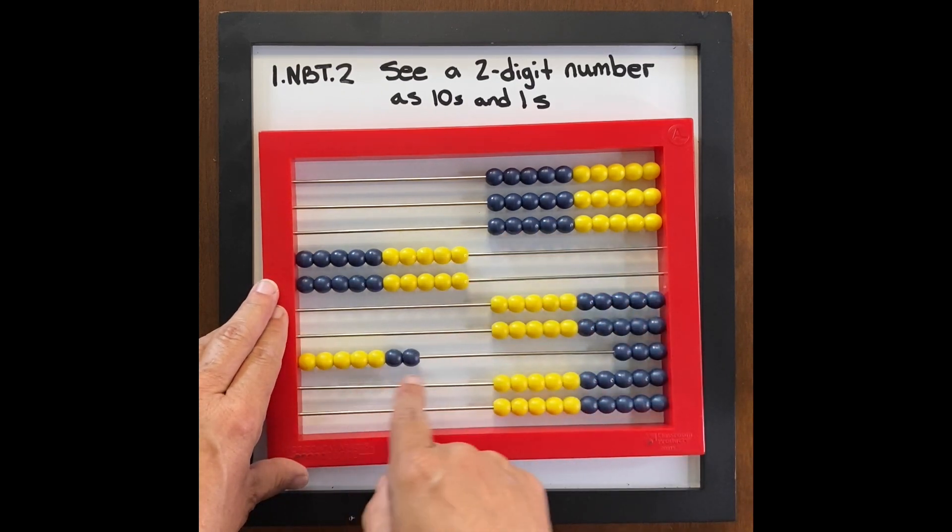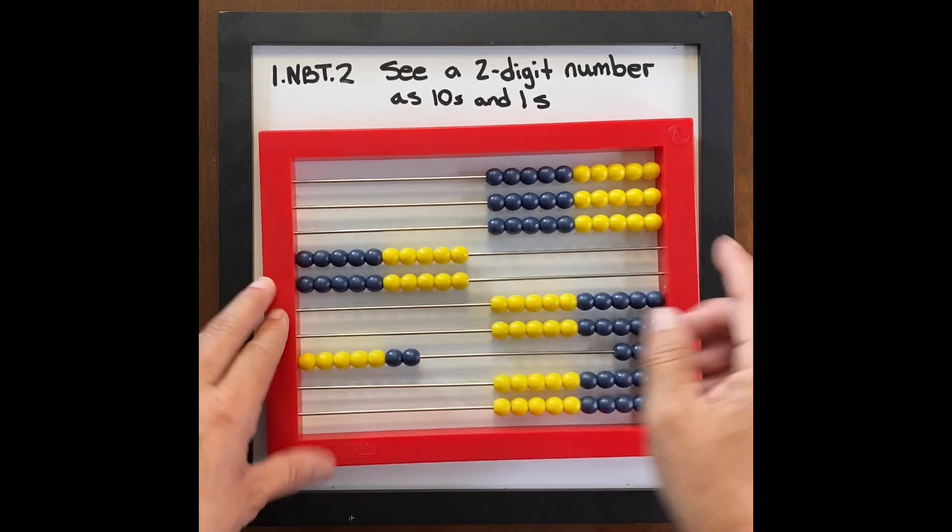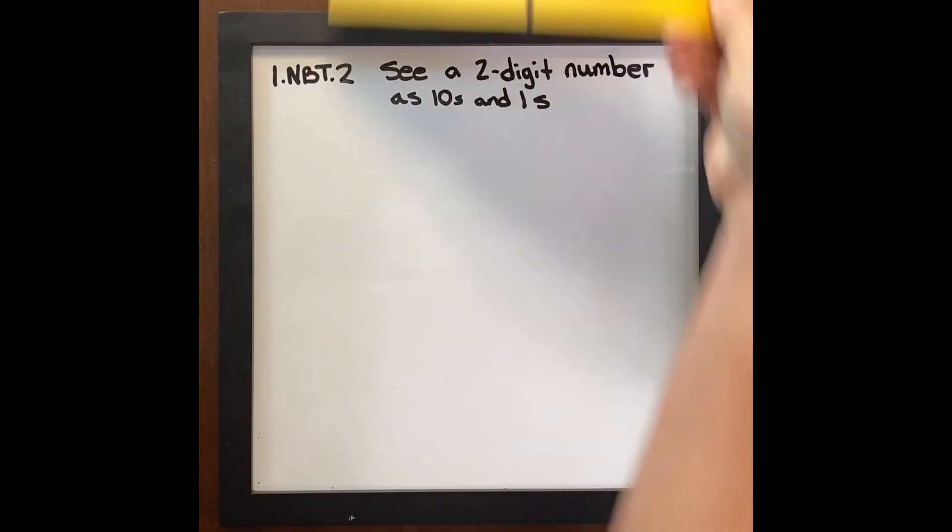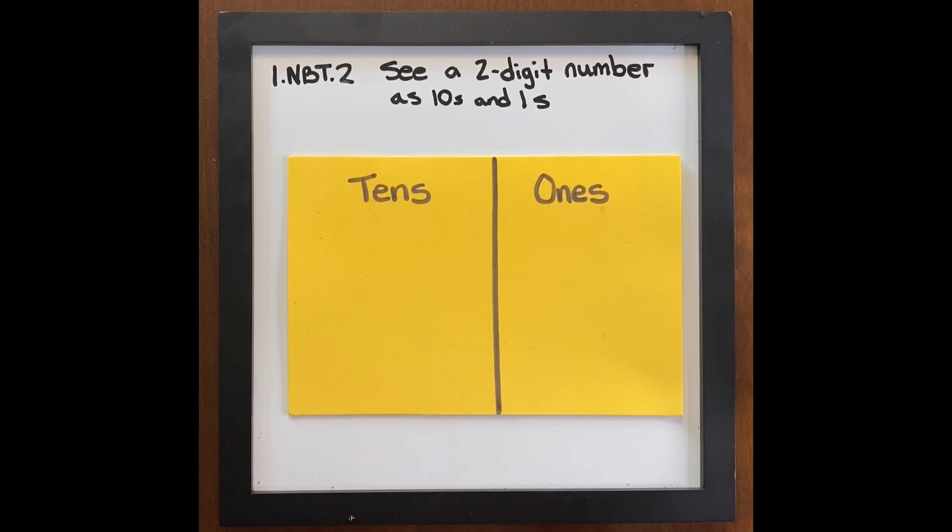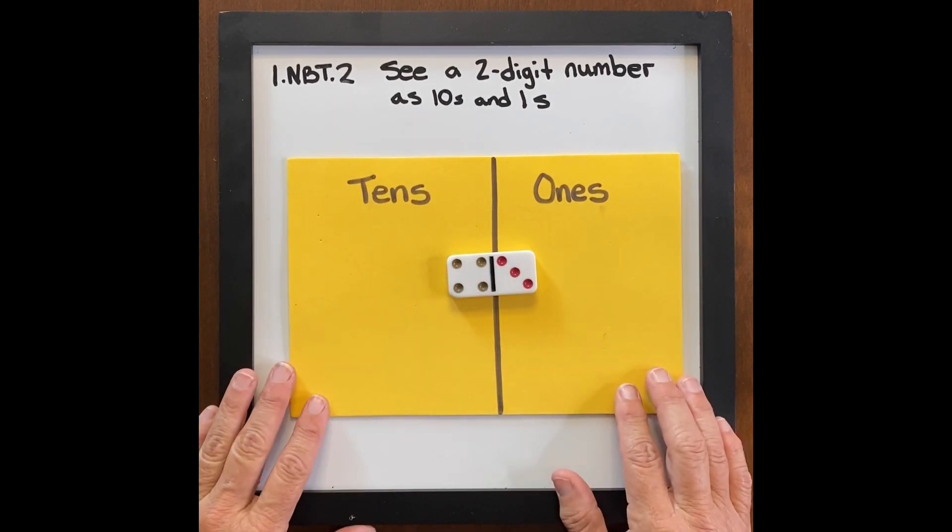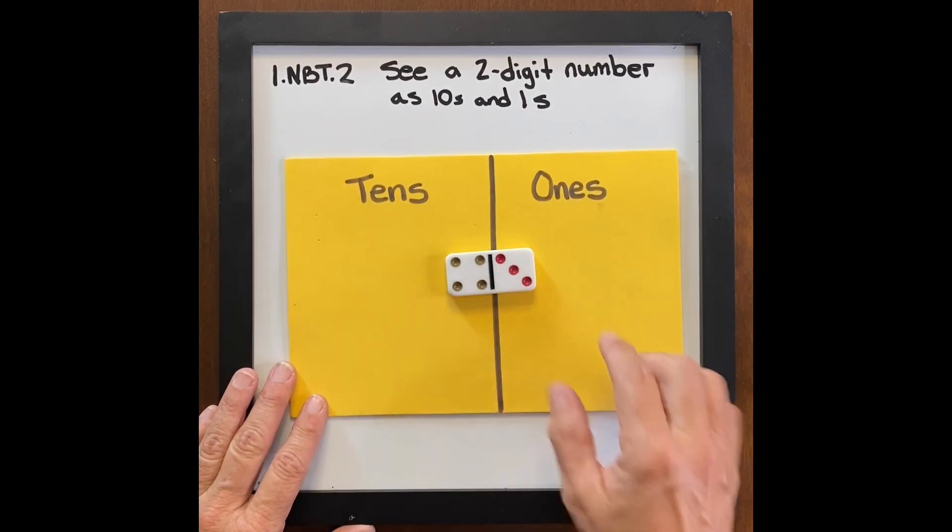Two tens, seven ones, 27. Then that goes into here where you can say, tell me my number. Four tens, three ones, 43.